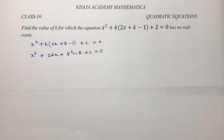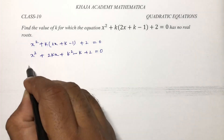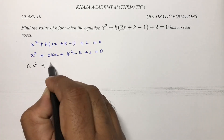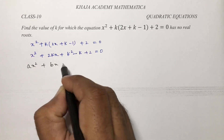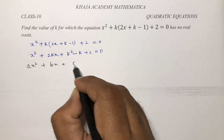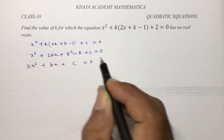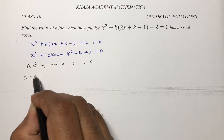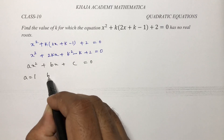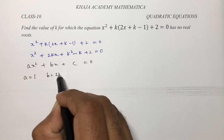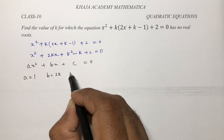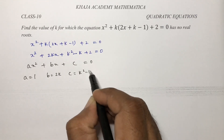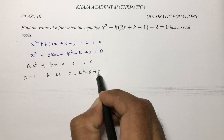Now compare the equation with the standard form, that is ax squared plus bx plus c equals 0. Comparing, the value of a is 1, b is 2k, and c is k squared minus k plus 2.